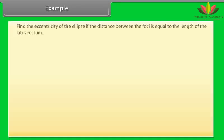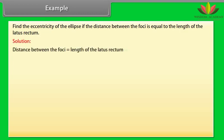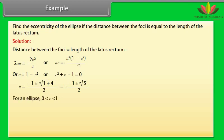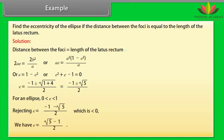Example: Find the eccentricity of the ellipse if the distance between the foci equals the length of the latus rectum. Solution: 2ae = 2b²/a, so ae = a²(1 - e²)/a, giving e = 1 - e², or e² + e - 1 = 0. Solving: e = (-1 ± √5) / 2. Since for an ellipse 0 < e < 1, we reject e = (-1 - √5)/2 which is less than 0. Therefore e = (√5 - 1) / 2.